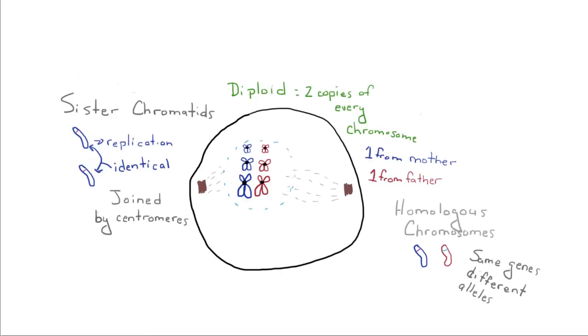Before we move on to the next step, there are a couple of vocabulary terms you need to know. Somatic cells are diploid. This means they contain two copies of every chromosome. You've got one from the mother and one from the father.